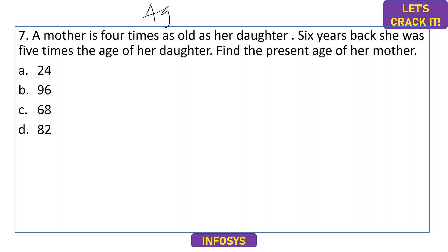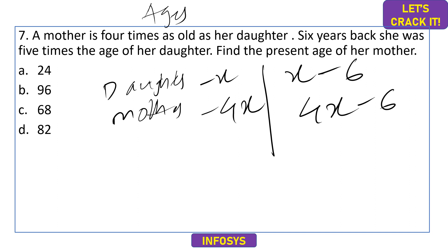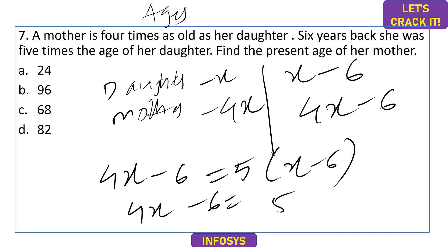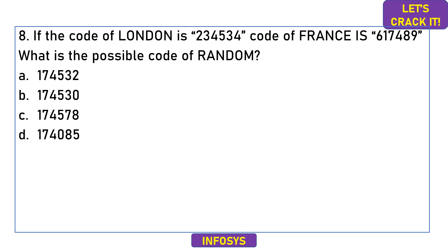The seventh question is a problem on ages. A mother is 4 times as old as her daughter. Let daughter's present age = x, so mother's age = 4x. Six years ago, the mother was 5 times the daughter's age: 4x − 6 = 5(x − 6), giving 4x − 6 = 5x − 30, so x = 24. The present age of the mother is 4 × 24 = 96. Option B is the correct answer.